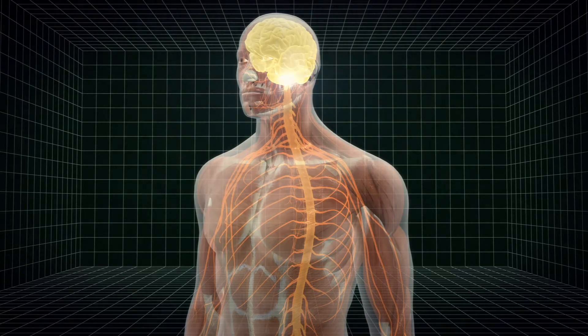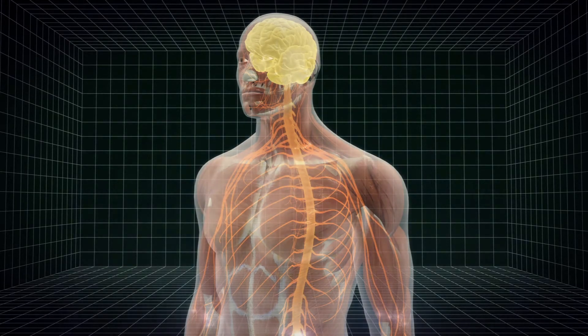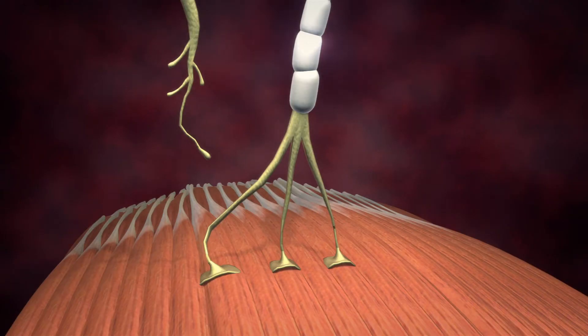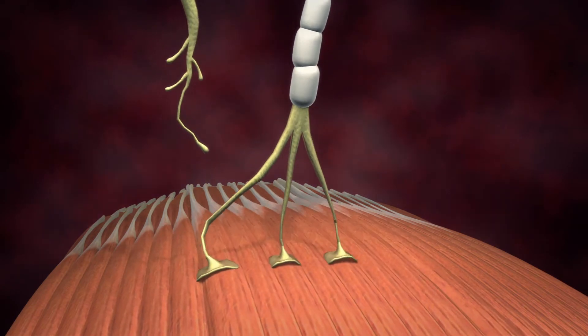Motor signals originate in the brain, travel through motor neurons and cross the neuromuscular junction to stimulate muscle movement.